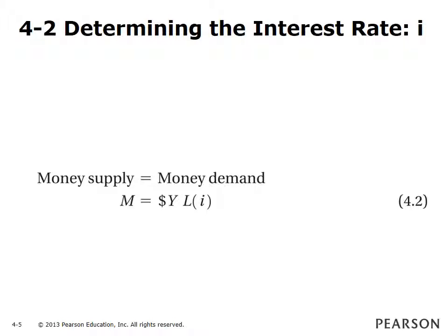Equation 4.2 shows money supply is equal to money demand. This gives us the LM relation. To simplify, assume the only kind of money is currency in circulation, which is supplied by the central banks. Equilibrium in financial markets requires that money supply equal money demand. The equation for financial market equilibrium means that the interest rate should be such that, given nominal income, people are willing to hold an amount of money equal to the existing money supply.